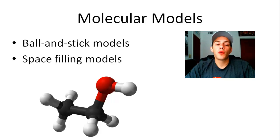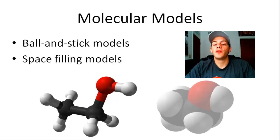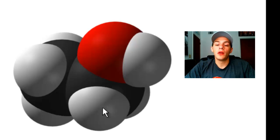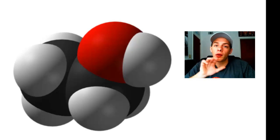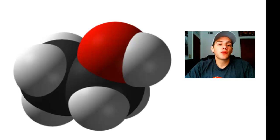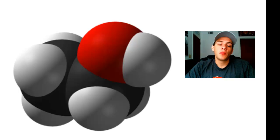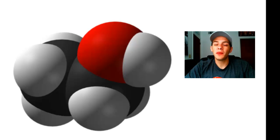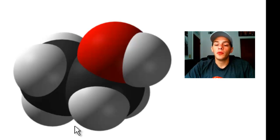Perhaps the most accurate representation of what a molecule looks like is the space filling model — this right here is a space filling model of ethanol. Sometimes ball and stick models are more useful than space filling models because depending on the angle, certain atoms might be hidden in a space filling model. If the molecule were tilted, you might not see a hydrogen and could get the wrong idea of how many atoms there are. But if you want the most accurate geometric representation, you would go with the space filling model.